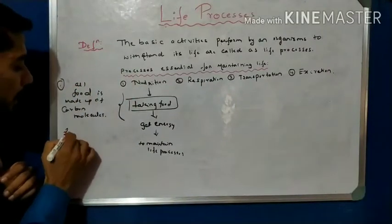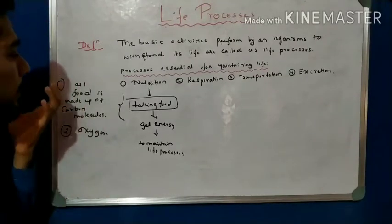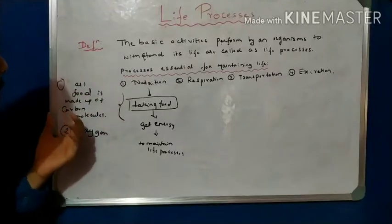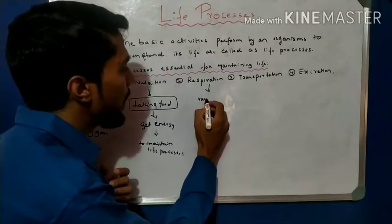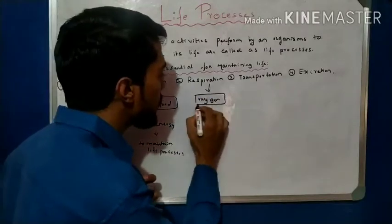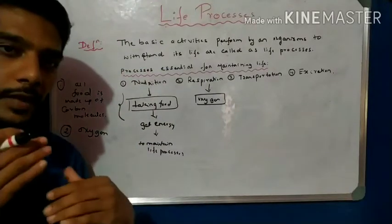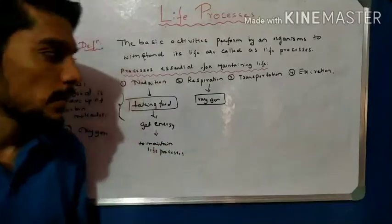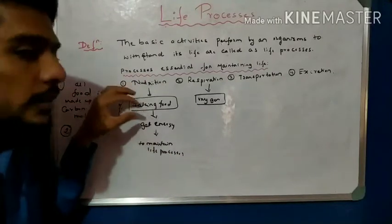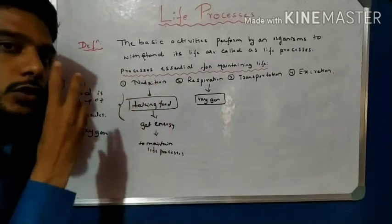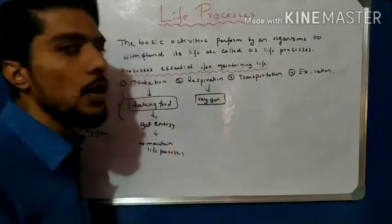Oxygen is also important — it comes in respiration. Taking of oxygen and giving out carbon dioxide is called the breathing process. Respiration is a somewhat complex process. After nutrition — which is the taking of food — the food taken by organisms is in two forms: one is food made up of carbon molecules, and the other very essential input is oxygen.